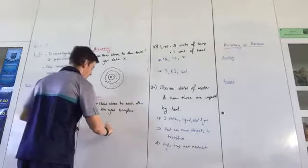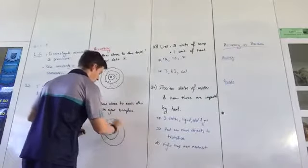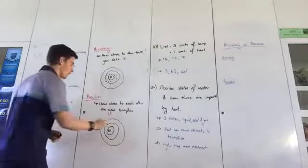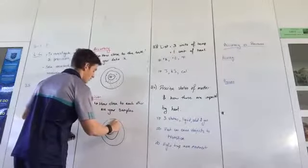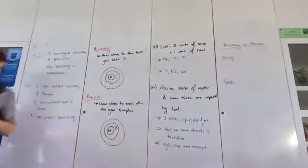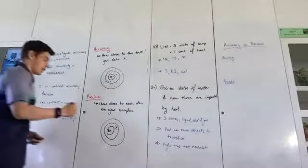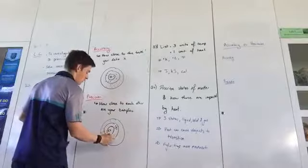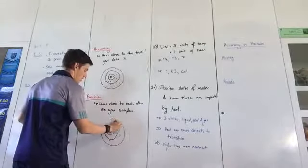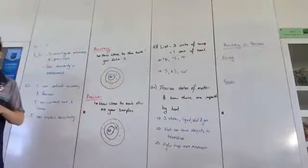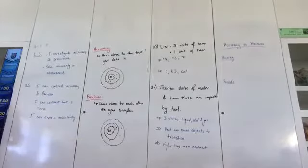Same analogy with our dartboard. An example of highly precise data collection would be something like that, whereas a non-precise selection of data would be something like this. When I'm playing darts, some people suggest I'm neither accurate nor precise.